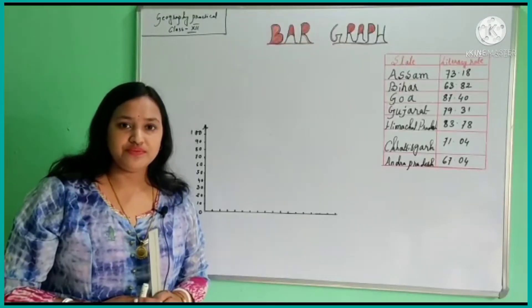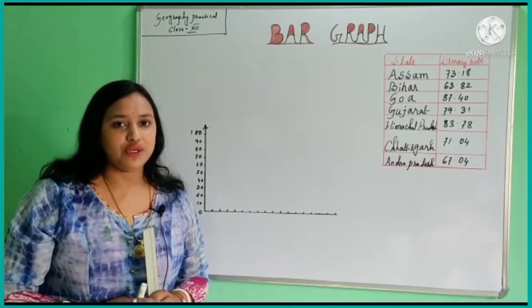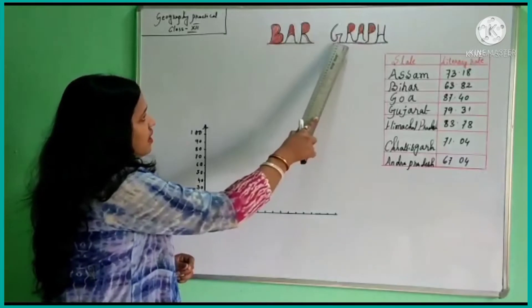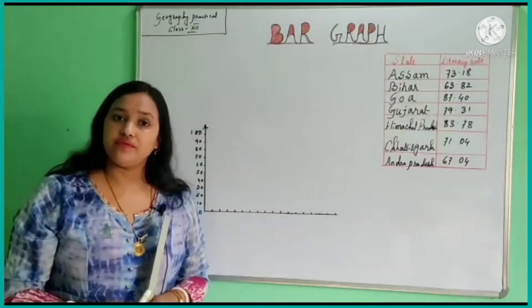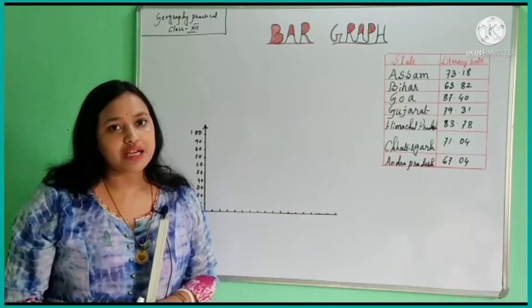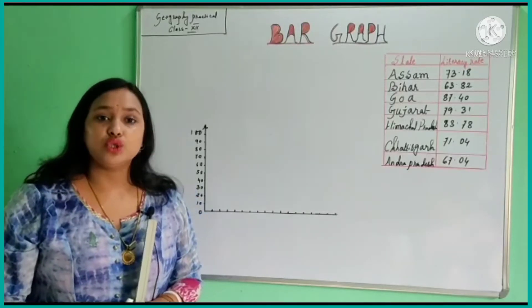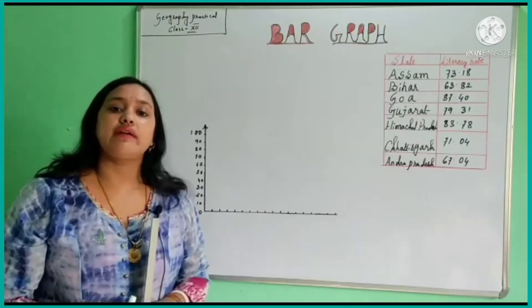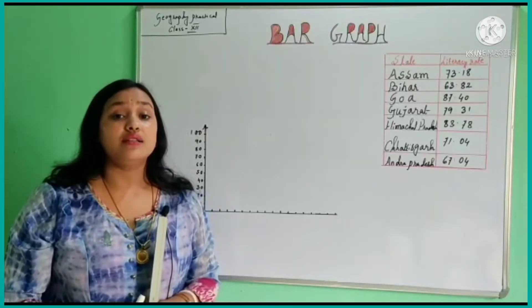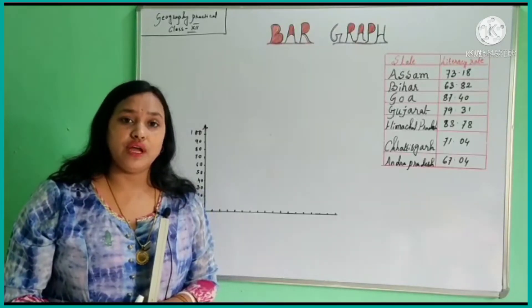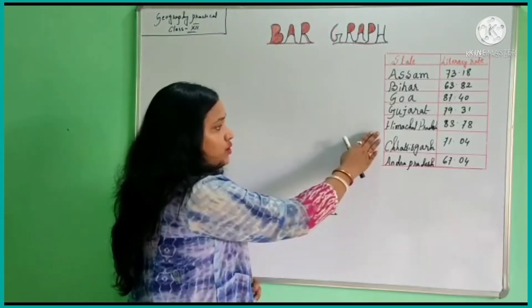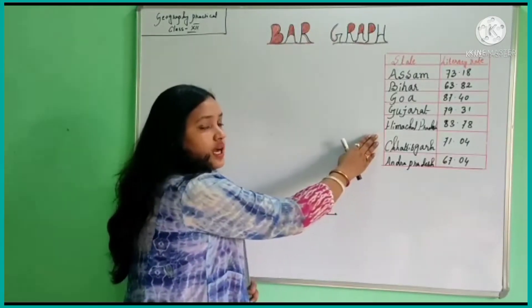Hello students, today our topic of discussion is bar graph. A bar graph is a graph that shows complete data with rectangular bars, and the height of the bars are the proportional values that they represent. So this is the data, and by using this data we can draw our bar graph.